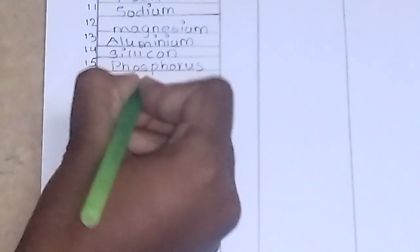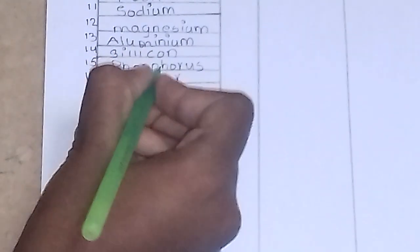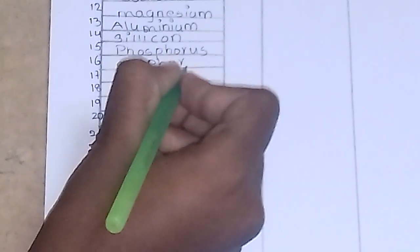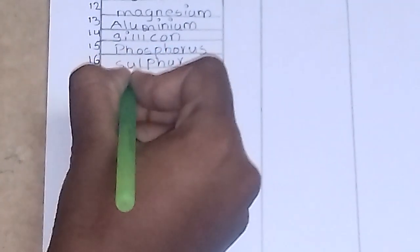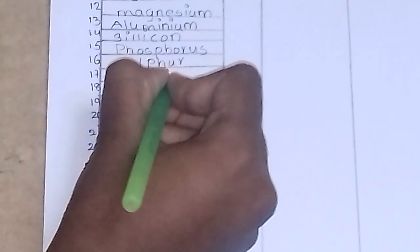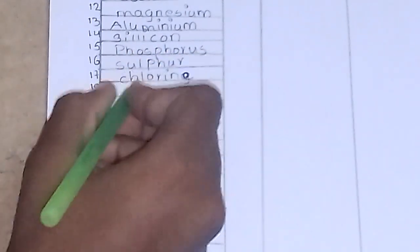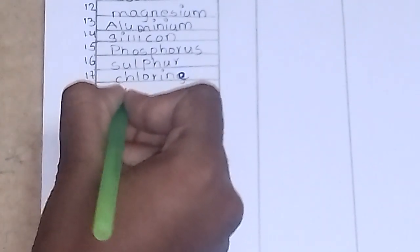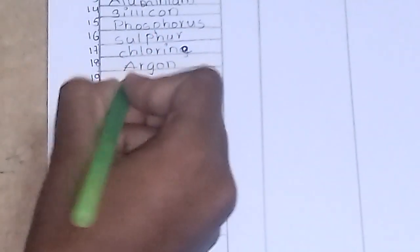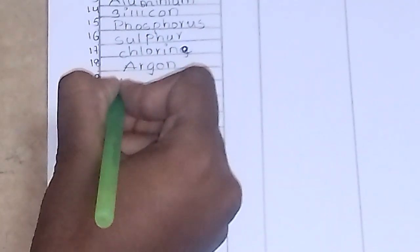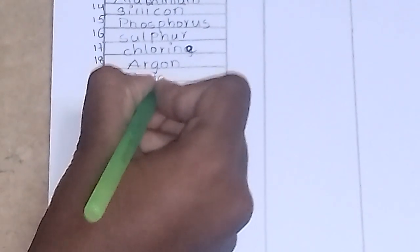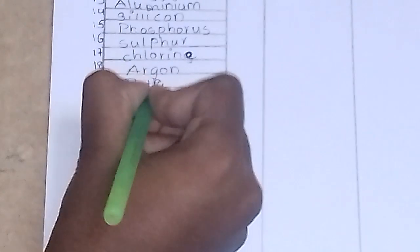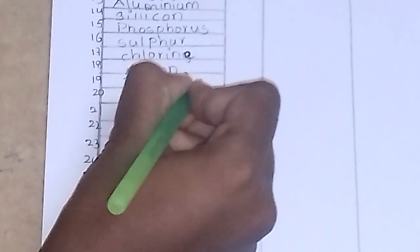The sixteenth is sulfur. The next one is chlorine. The next one is argon. The 19th one is potassium. The 20th one is calcium.